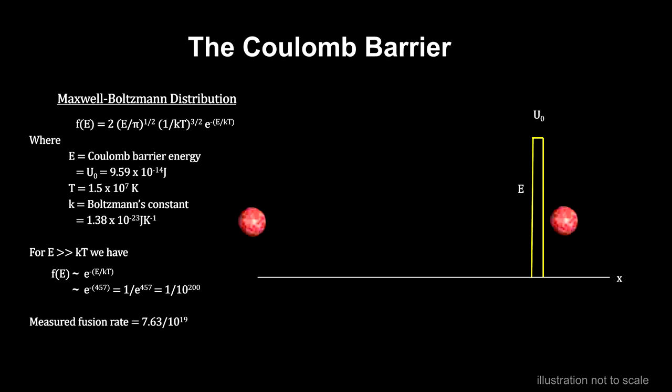But we know there is more, because we have measured the fusion rate of a proton in our sun's core, and it's 180 orders of magnitude more than this classical physics predicts.